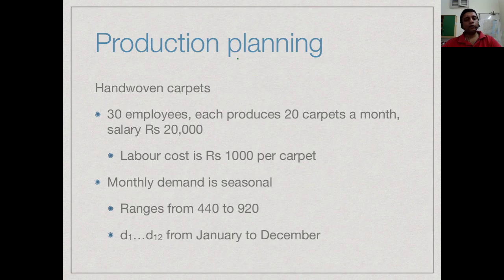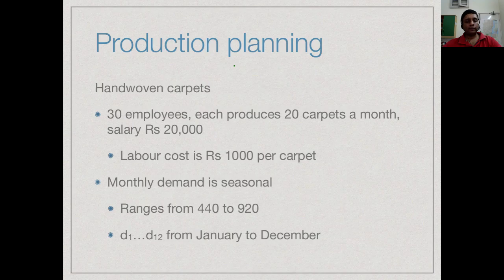The next example we are going to look at is a carpet manufacturing company. We have a company which makes hand-woven carpets and currently employs 30 employees. Each employee produces 20 carpets a month and is paid 20,000 rupees as salary. So the cost per carpet is 1,000 rupees to manufacture.